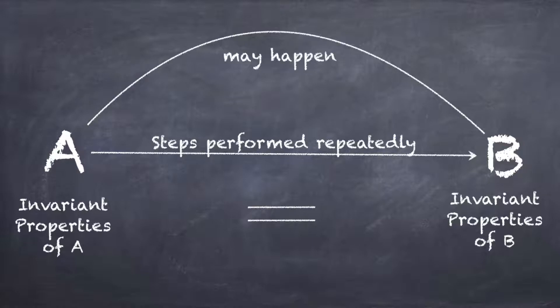But what if these two invariant properties are not equal? If these two invariant properties are not equal, you can surely, 100% say that you can never reach state B starting from state A, because these two have different invariant properties and these properties will not change no matter how many times you apply those steps.